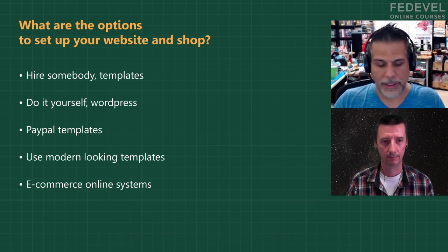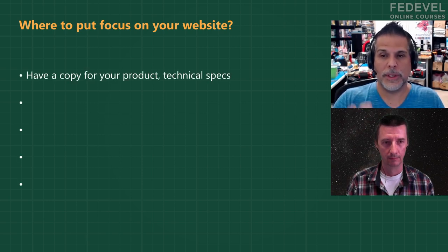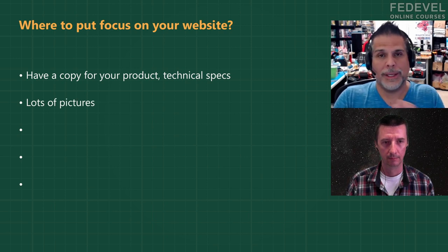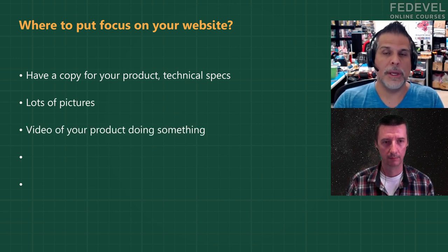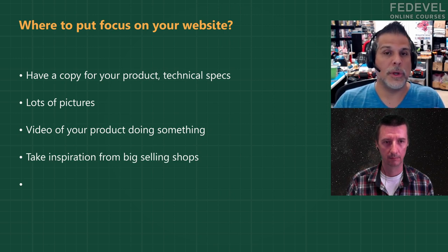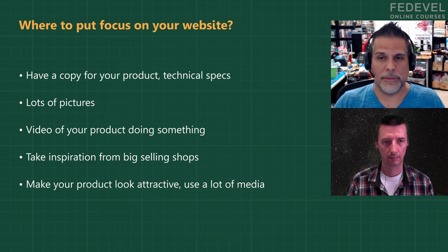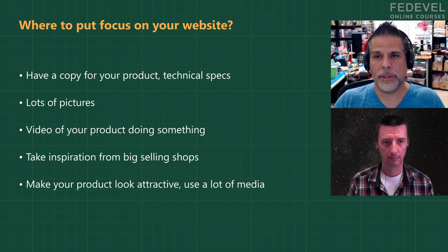A big mistake people make when building a website: make sure you have copy about the product, technical specs, and lots of images — pictures of it. If the product does something, have a video of it so people can see what it does. A lot of times people have a really small picture and a bunch of copy and they're thinking like engineers. Look at what Amazon, Sony, Xbox, or Tesla do — things have to be attractive, they've got to draw you in, and you have to use a lot of media to do that.